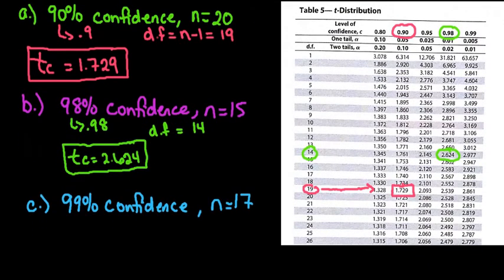And then the last one that we're going to find is we're going to look for 99% confidence when n equals 17. So again, our 99 would be 0.99. Our degrees of freedom would end up being 16.